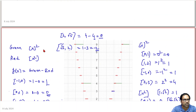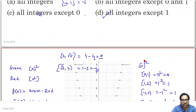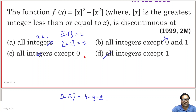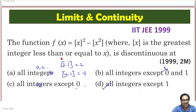This is a problem based on conceptual understanding of greatest integer function of x whole square versus greatest integer function of x square. Since the question only asked about 0 and 1, we did not need to check 2. At 0 it is discontinuous, at 1 it is continuous. Thank you.